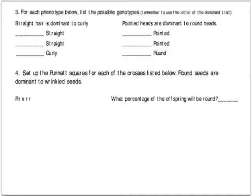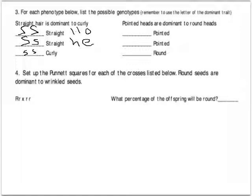I'll use the uppercase letter for straight. There are two possible genotypes for straight: uppercase-uppercase, which is homozygous — this person got two alleles for straight hair — and uppercase-lowercase, which is heterozygous but still expresses straight hair as the phenotype. Curly is only seen with two lowercase s's; it's a recessive, homozygous genotype.